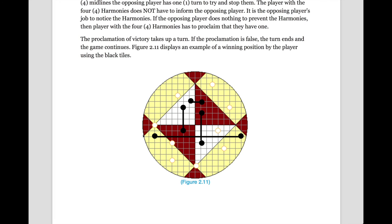The image here displays an example of a winning position by the player using the black tiles. As you can see, they have a harmony across all midlines, midline one, two, three, and four, while the player with the white pieces has no harmonies.